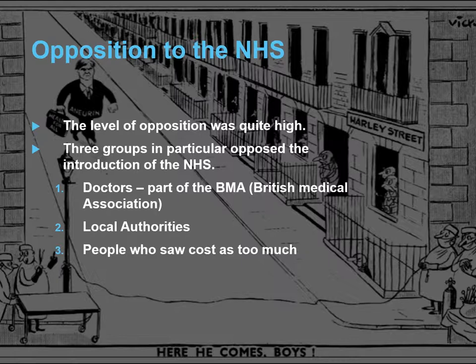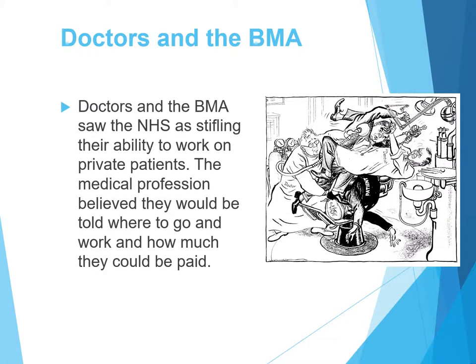Opposition to the NHS was quite high when it was initially developed. Three groups in particular opposed it: the British Medical Association, local authorities, and those who saw it as simply going to cost too much. In the background you can see Harley Street, the area where lots of private doctors practised, and they were aiming to trip up Bevan as he marched towards developing the NHS.